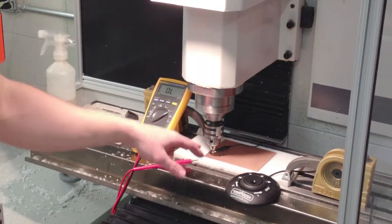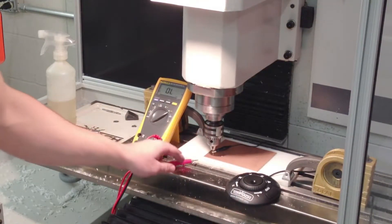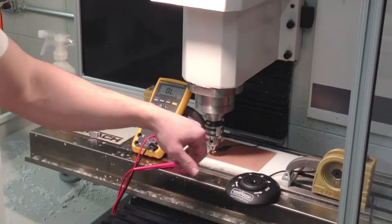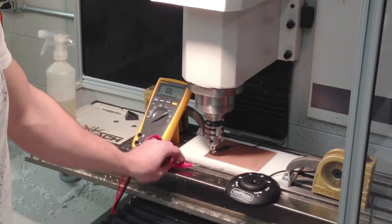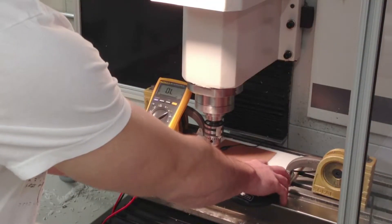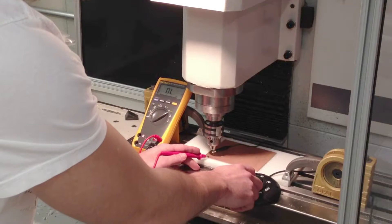So right now I'm just touching off each one of the tools that we're going to use in this sequence and an easy way to do this is use a multimeter on the continuity setting and we have one side attached to the tool and then the other side we touch to the plate and we just jog or step down the Z axis until we hear a beep.